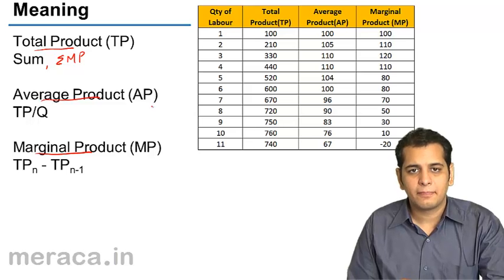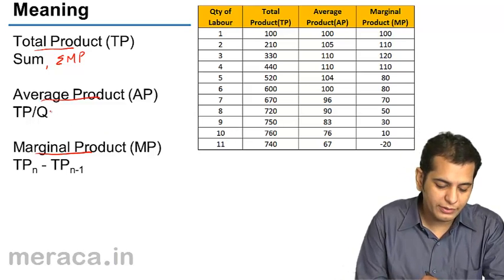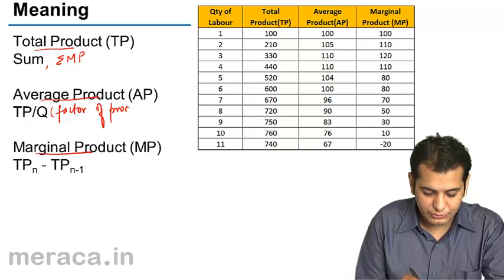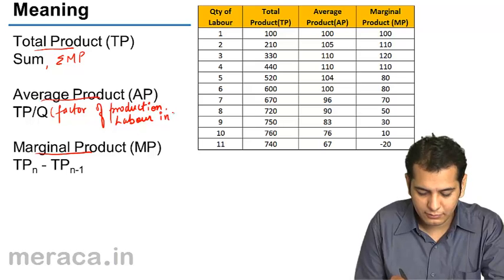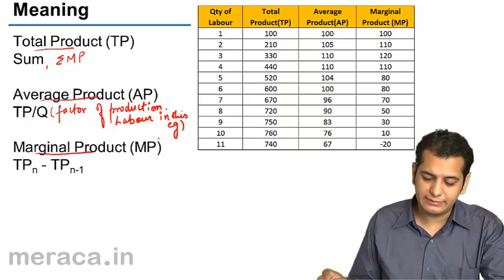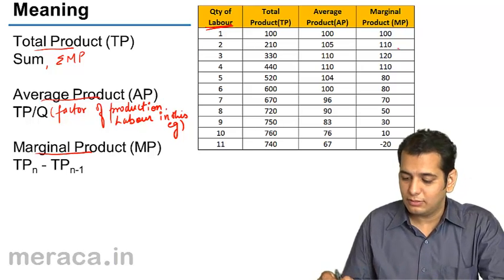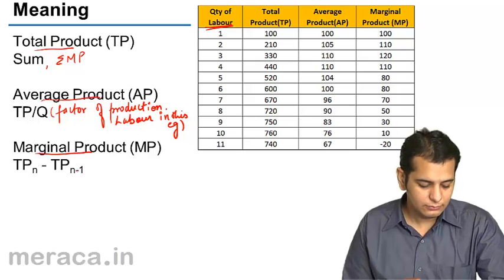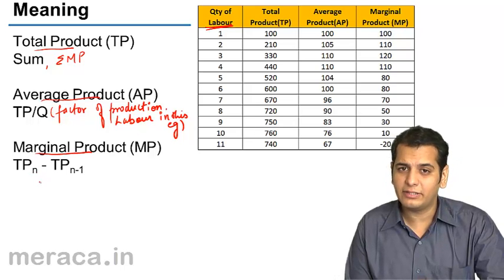Average Product is Total Product divided by the total quantity of Labour — the Factor of Production taken in this example is Labor. Marginal Product is the Total Product at the Nth level minus the Total Product at the N-1 level.